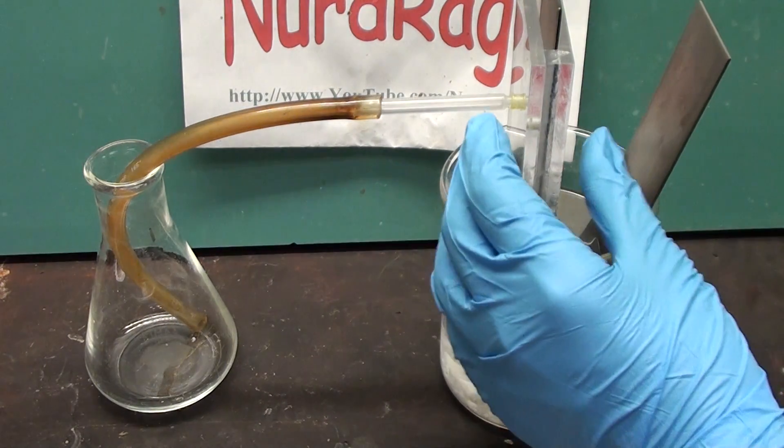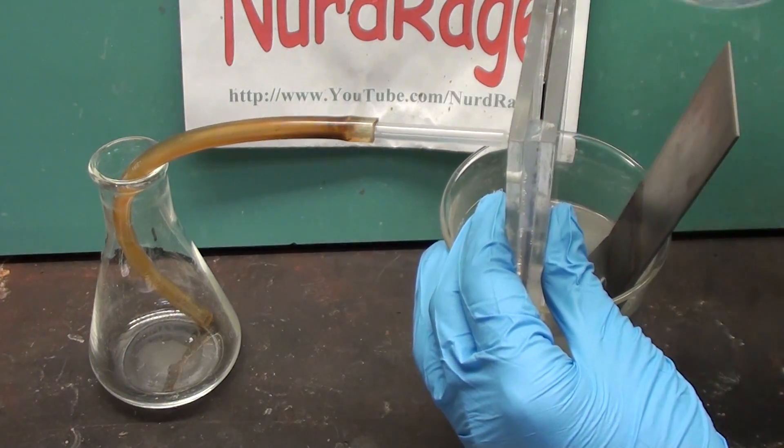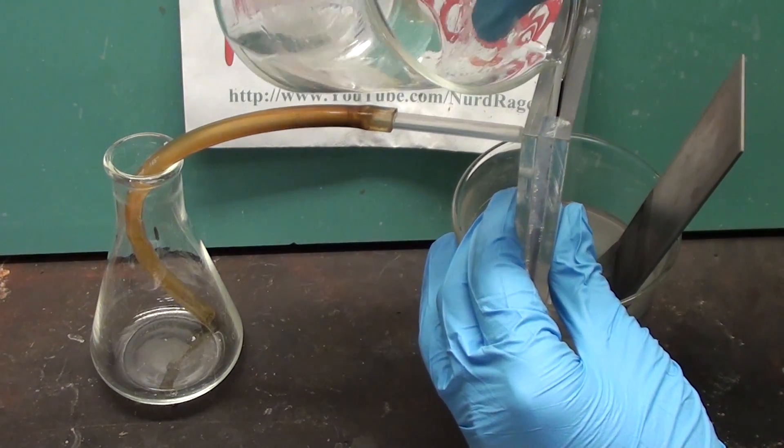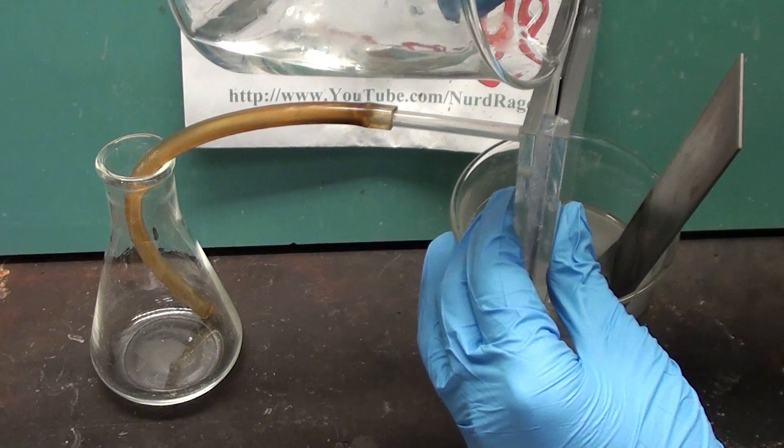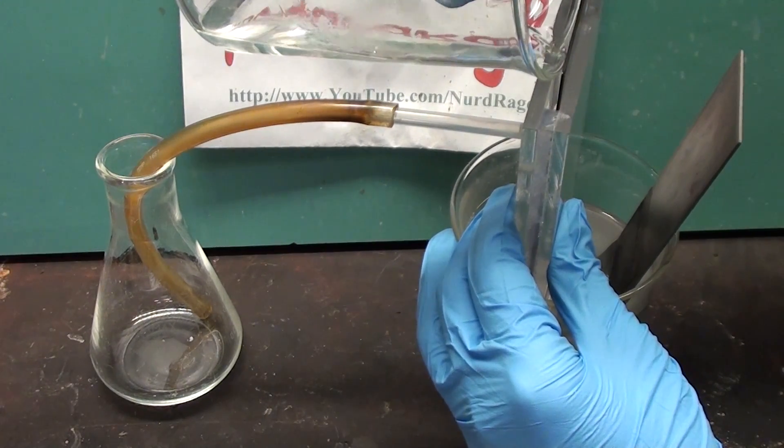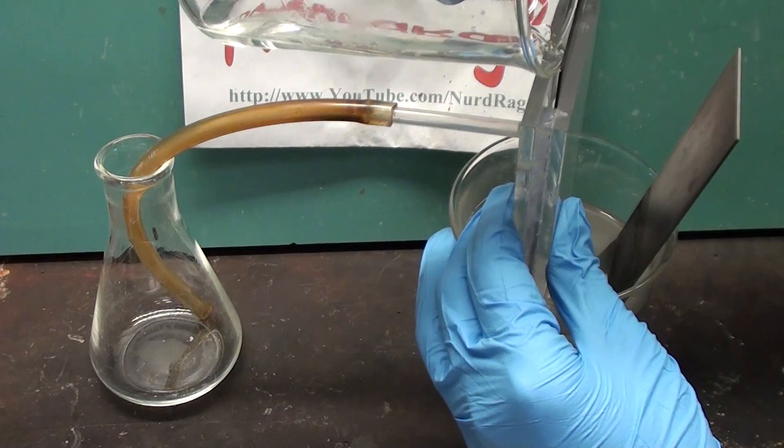The inner compartment needs electrolyte as well so I'm going to pour in some deionized water to fill it. Normally deionized water is non-conductive but a small amount of sodium ions will diffuse in through the membrane to jumpstart our electrolysis.